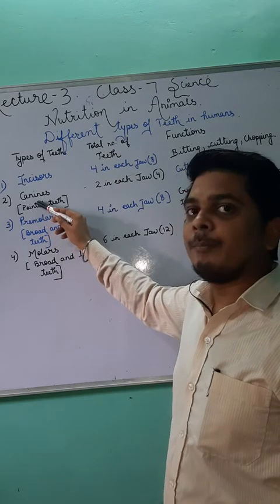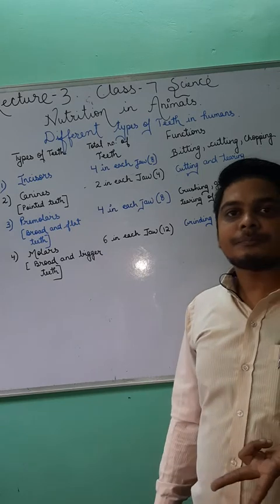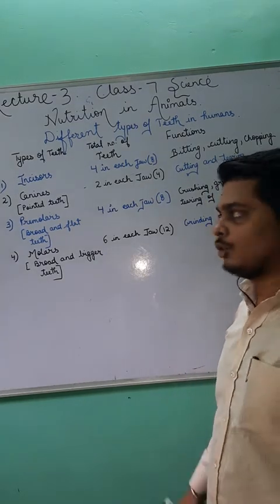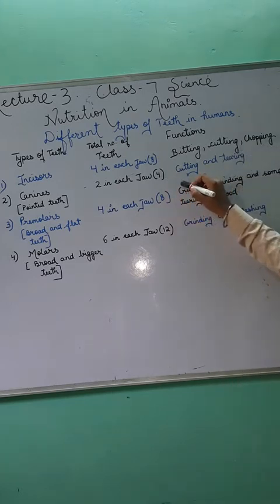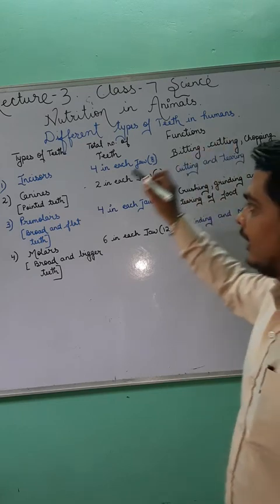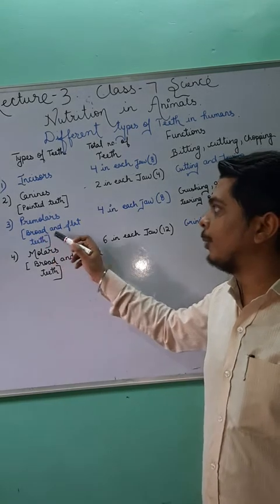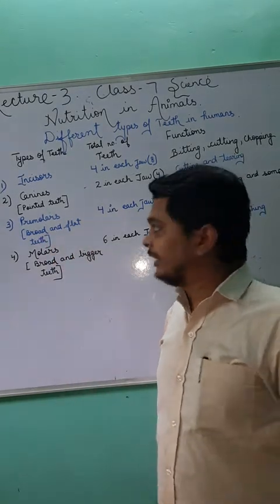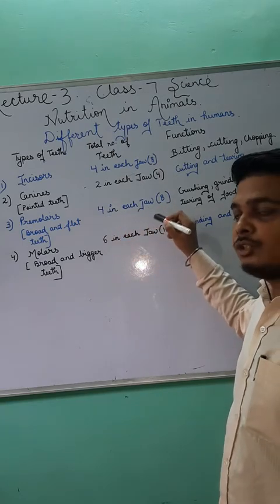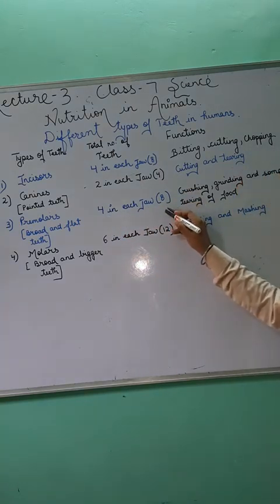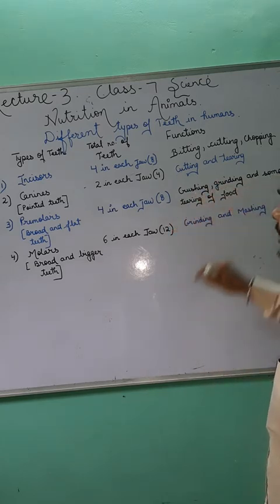The canine teeth look like pointed teeth. Each jaw has two canine teeth, giving a total of four canines. The function of canine teeth is cutting and tearing. The premolar teeth look like broad and flattened teeth. There are four premolar teeth in each jaw, combining to eight in total. The function of premolar teeth is crushing, grinding, and some tearing of food.